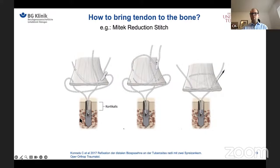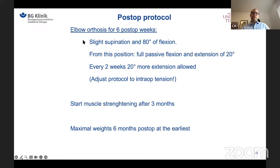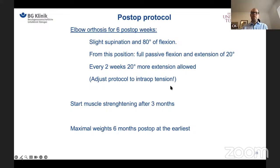For the post-operative protocol, we use an elbow orthosis positioning the arm in slight supination and initially 80 degrees of flexion. From this position we allow 20 degrees of extension, bringing the arm to 60 degrees of flexion, then increase extension by 20 degrees every two weeks. This protocol needs to be adapted to the intraoperative tension — do not restrict range of motion more than necessary.